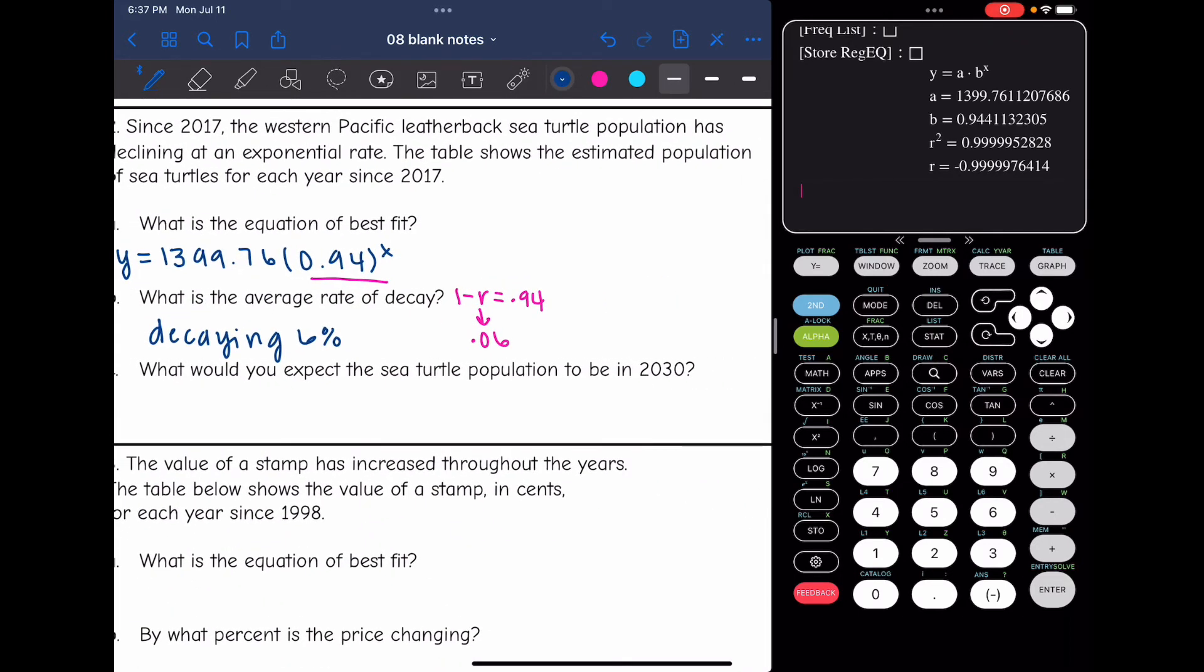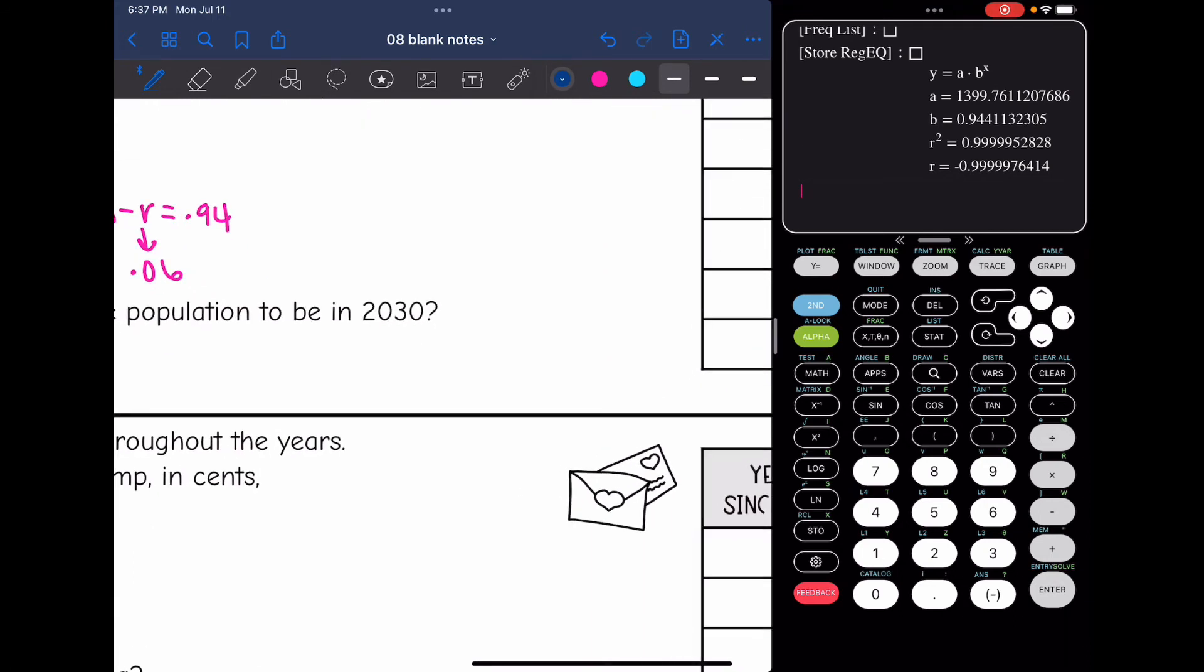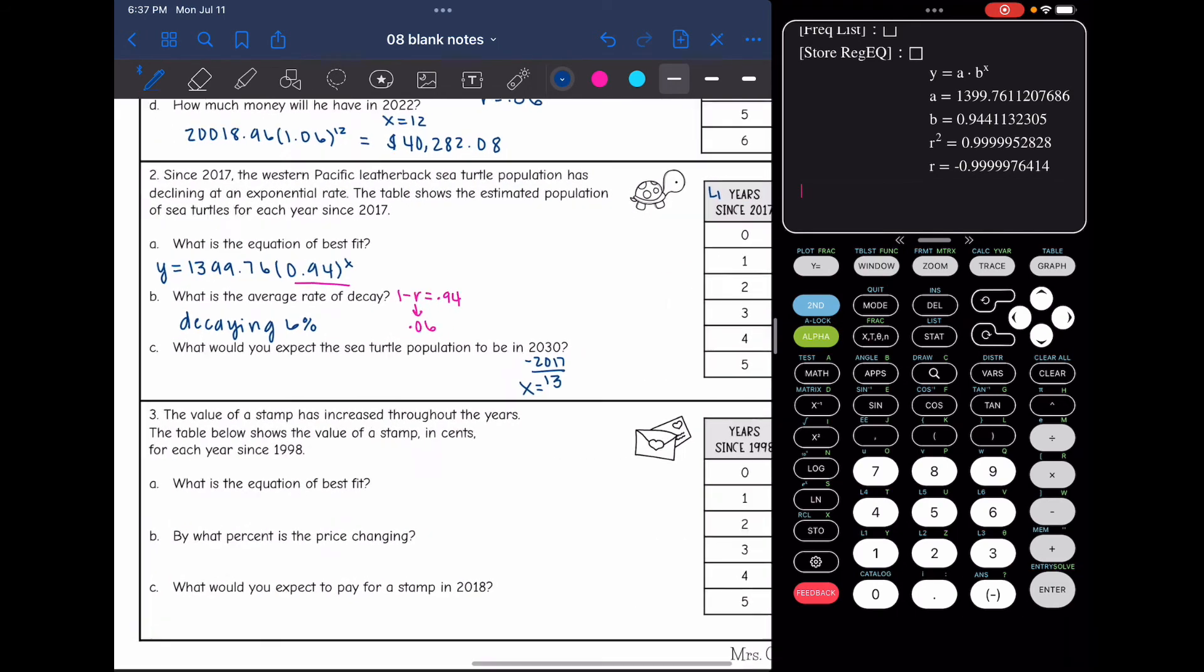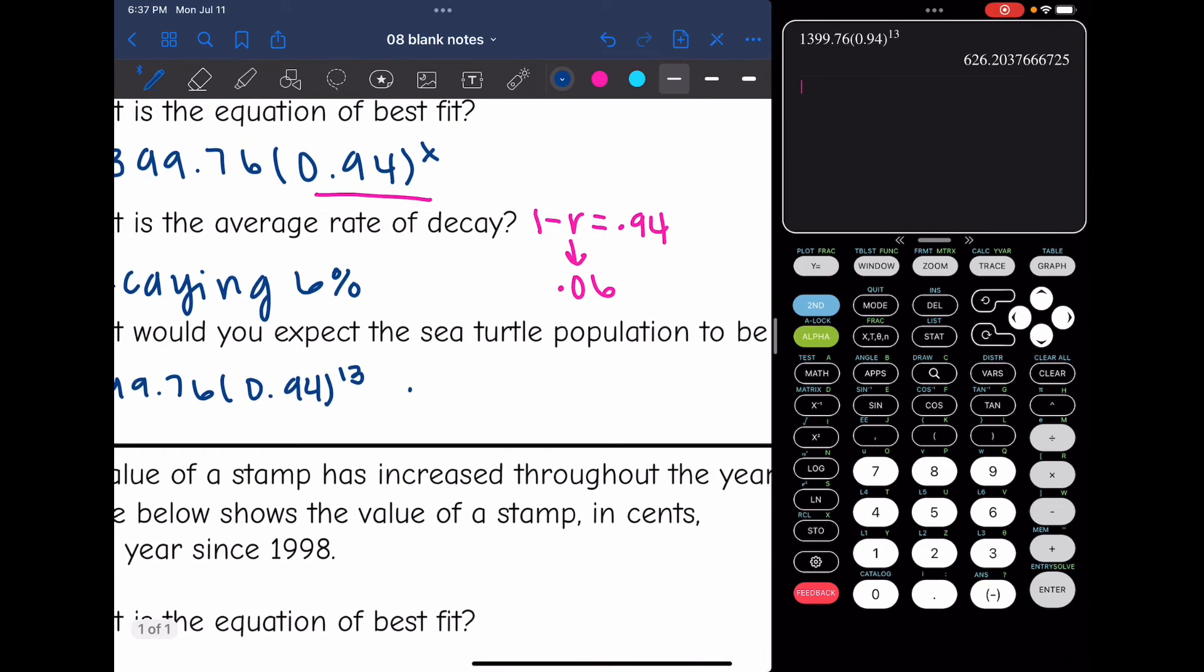And then the last question for this one says what would you expect the sea turtle population to be in 2030? Well, it's years since 2017 and 2030 is 13 years since 2017. So I'm going to substitute in X equals 13 into that equation that we got and that will tell me the expected sea turtle population in 2030. So it'll be Y equals 1,399.76 times 0.94 to the 13th. So 1399.76 times 0.94 to the 13th. And we would expect there to be about 626 sea turtles.